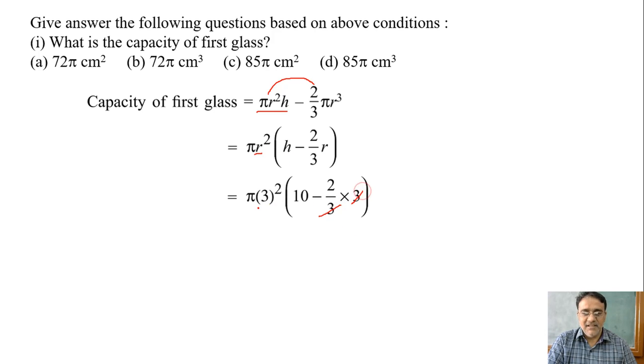So 3 and 3 cancel and we get 9π into (10 minus 2), that is 8. Final answer? 72π. Right, 72π cm³. Which is the correct answer? Option B.